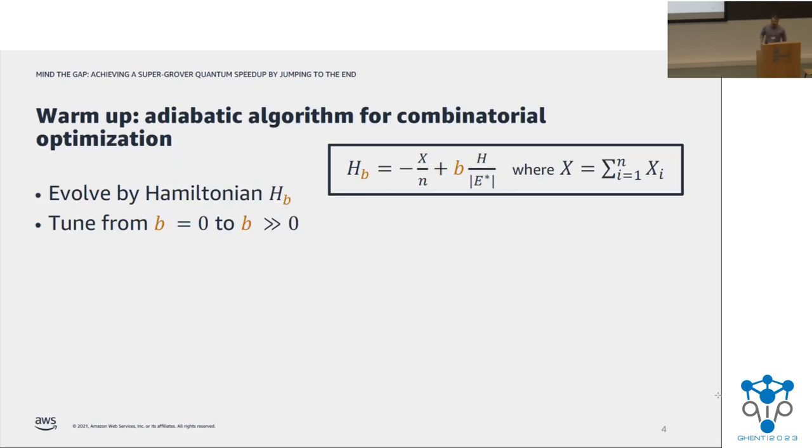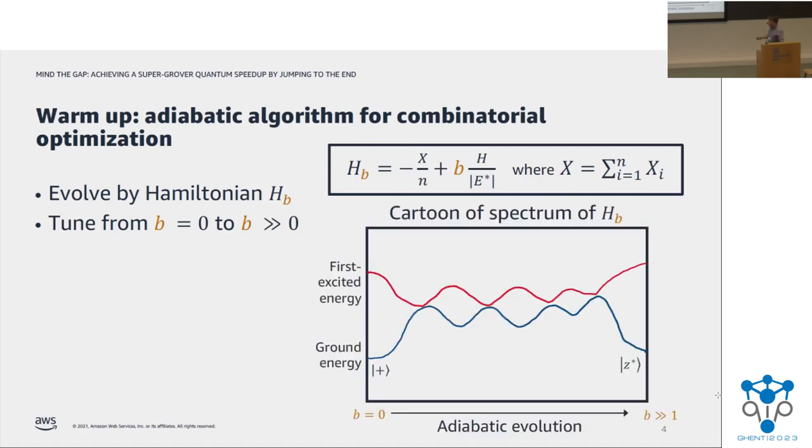So before I state our actual algorithm, I want to warm up with the adiabatic algorithm, which is a well-known approach for solving combinatorial optimization problems on a quantum computer. The idea behind the adiabatic algorithm is to define a path of Hamiltonians, H sub B, where B is a free parameter, where this path interpolates between a Hamiltonian, this X Hamiltonian, when B equals zero, which is just a transverse field, a sum of Pauli X operators. And then when B is large, the second term dominates, which contains the information about our cost function. So here we've taken the cost function H, which is just a diagonal matrix, and divided by E star in order to normalize it so that its minimum value is negative one.